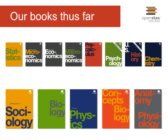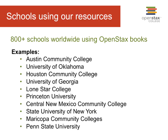Here are our books thus far — Precalc and Chemistry will publish in about a month and two months respectively. Our book selection comes down to student impact: we chose subjects with the highest enrollment of students, particularly in the U.S. We know there are about a million students a year taking economics, and 300,000 to 500,000 taking physics, biology, and anatomy and physiology. The second consideration is how expensive the current textbooks are. We expect to complete 26 books by the end of 2016.